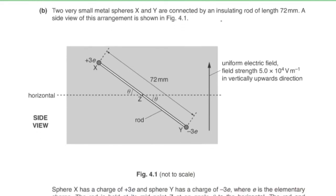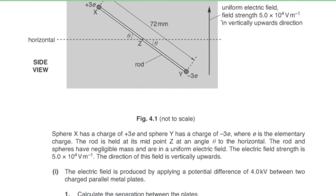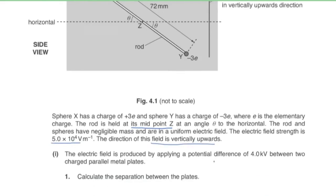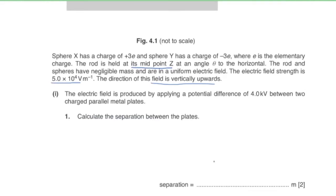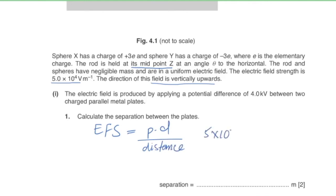Part b: two small metal spheres X and Y are connected by an insulating rod of length 72 mm. Sphere X has charge +3e and sphere Y has charge −3e. The rod is held at midpoint Z at angle θ to the horizontal, in a uniform electric field of strength 5 × 10⁴ N/C directed vertically upwards.